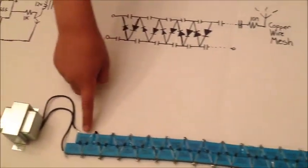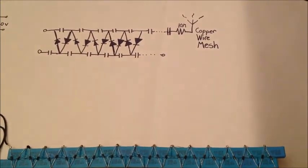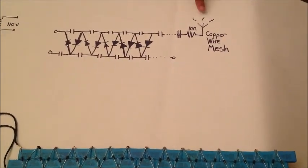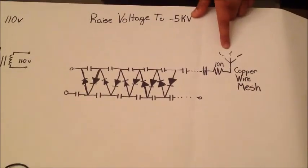This series of capacitors and diodes steps the voltage up to negative 5 kilovolts to create a strong shock through this copper wire mesh.